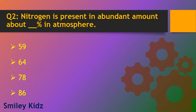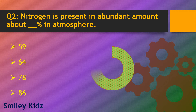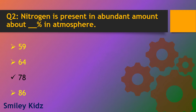Question number 2. Nitrogen is present in abundant amount about what percentage in atmosphere? Options are 59, 64, 78 and 86. The right answer is 78. Nitrogen is present in abundant amount about 78% in atmosphere.